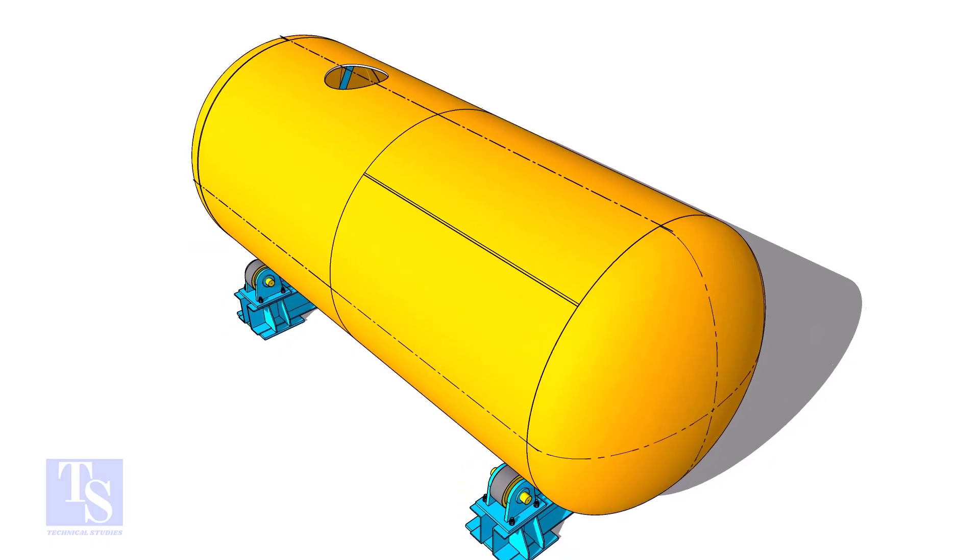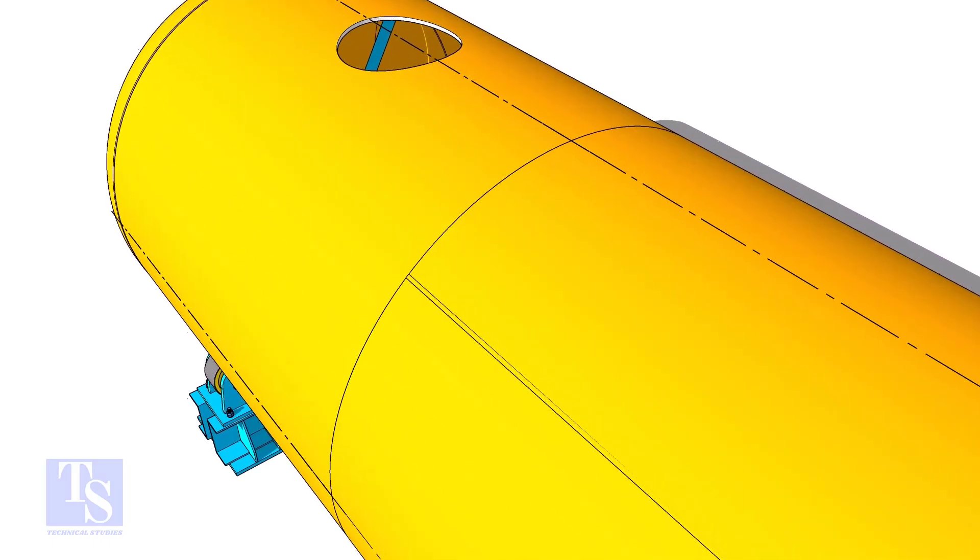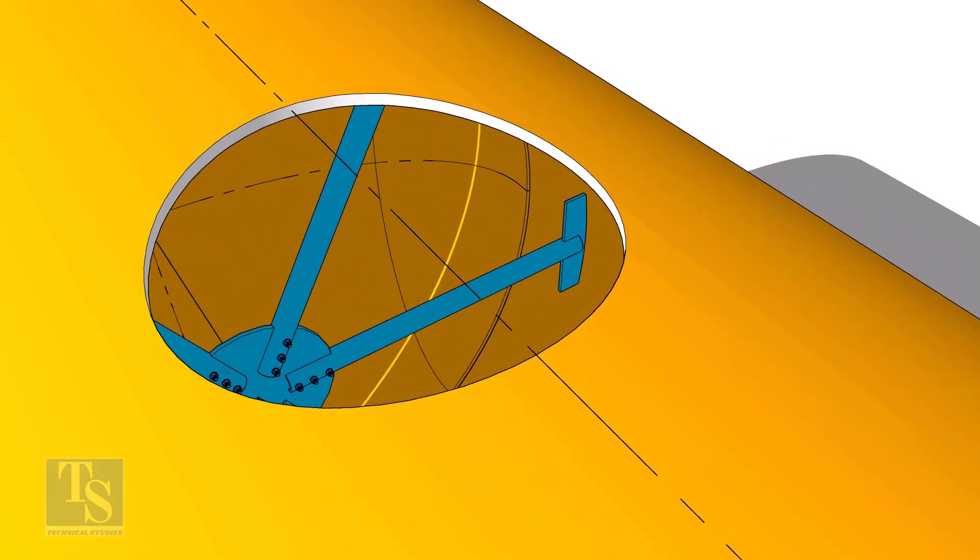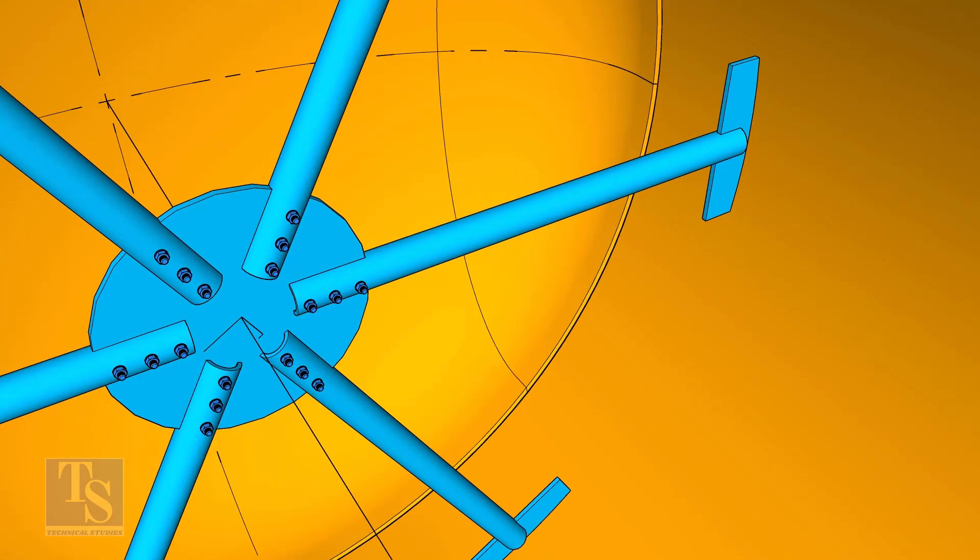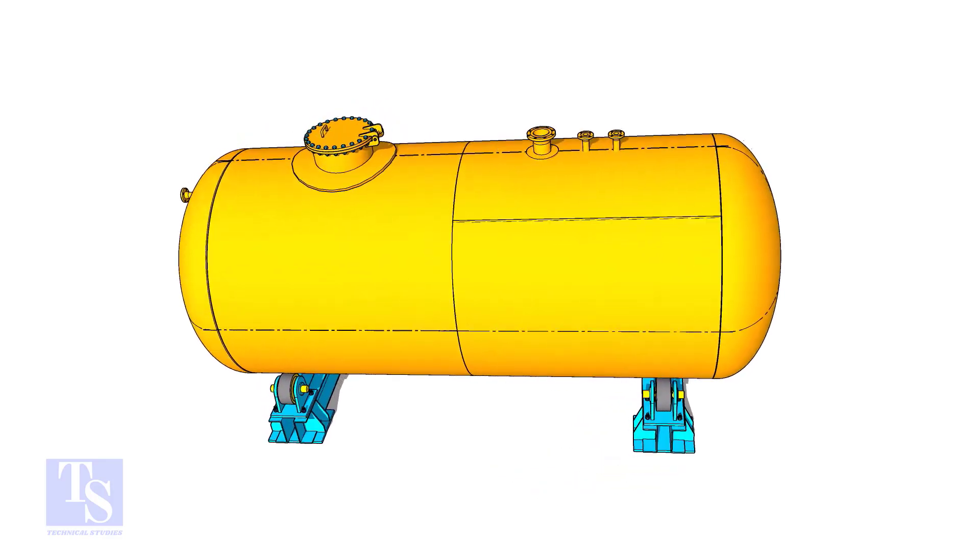Fit up both the dish ends. After the circumferential seam welding, remove the spiders. Complete the welding of the manhole and the nozzles, install the lifting hooks, nameplate, etc.